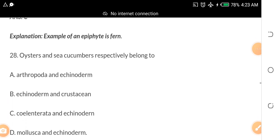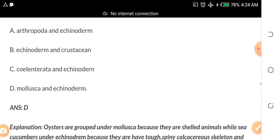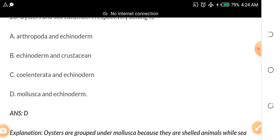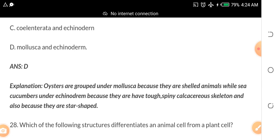Remember that at the end of this video you will qualify for free JAMB syllables and free JAMB past questions. Oysters and sea cucumbers respectively belong to A. Arthropoda and Echinoderm B. Echinoderm and Crustacean C. Coelentrata and Echinoderm D. Mollusca and Echinoderm. The answer is D, mollusca and echinoderms. Oysters are grouped under mollusca because they are shelled animals while sea cucumbers under echinoderms because they have tough spiny exoskeleton and also because they are star shaped.